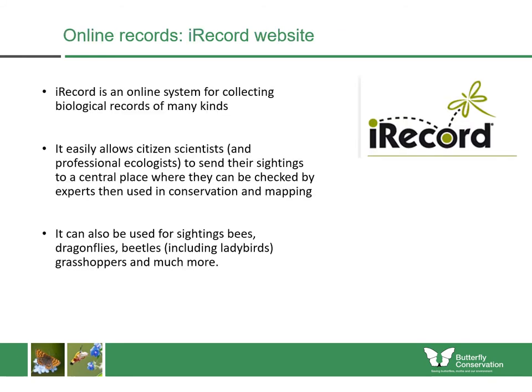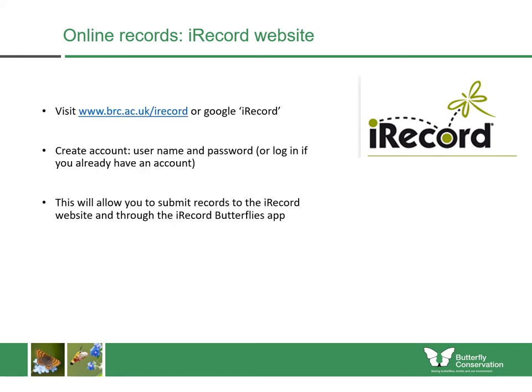One of the easiest ways to get records to the recorder now is through an online system called iRecord. This system is used for collecting biological records of many different kinds, allowing more people to become citizen scientists. You send your sightings to a central place where they're checked by experts and then used in conservation and mapping. You can also use it for other types of wildlife including bees, dragonflies, beetles, grasshoppers, and much more.